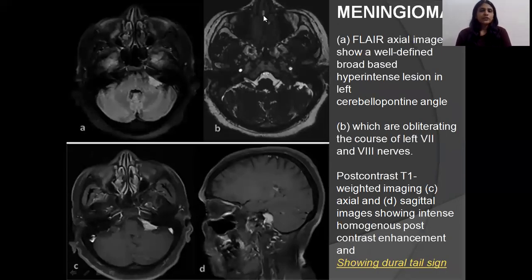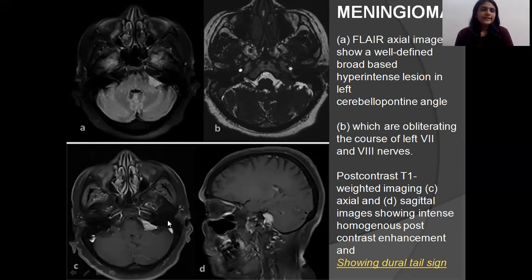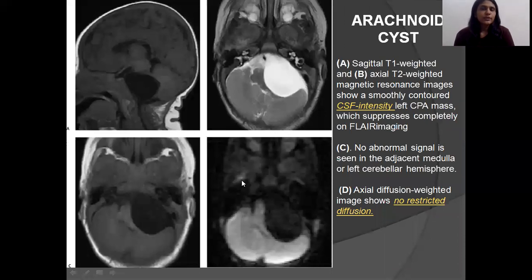The first pathology is meningioma — a benign lesion arising from the meninges. On the FLAIR image, as seen in image A, there is a well-defined broad-based hyperintense lesion in the left CP angle. On image B, it can be seen obliterating the course of the 7th and 8th nerves. On the post-contrast image, there is homogeneous post-contrast enhancement and a dural tail sign, which is pathognomonic for meningioma.